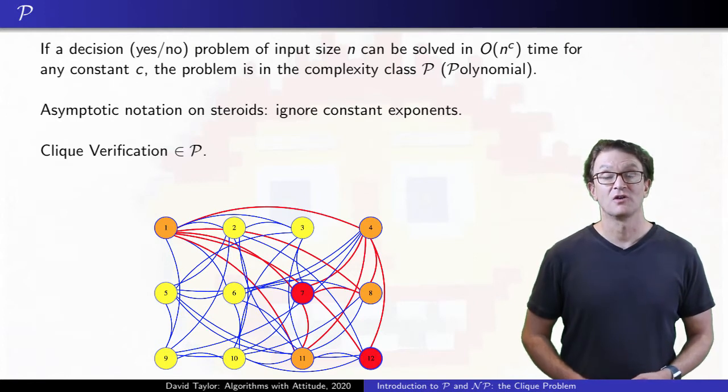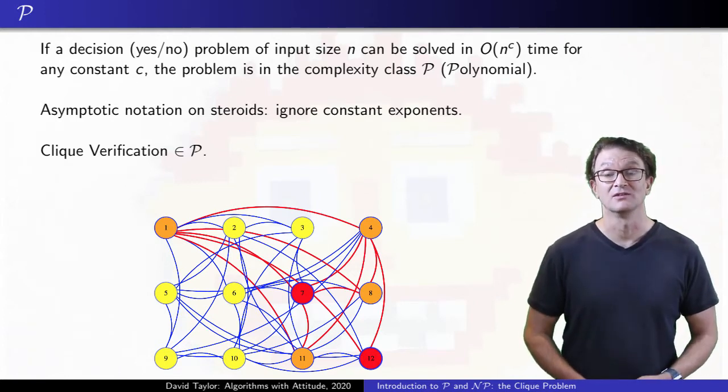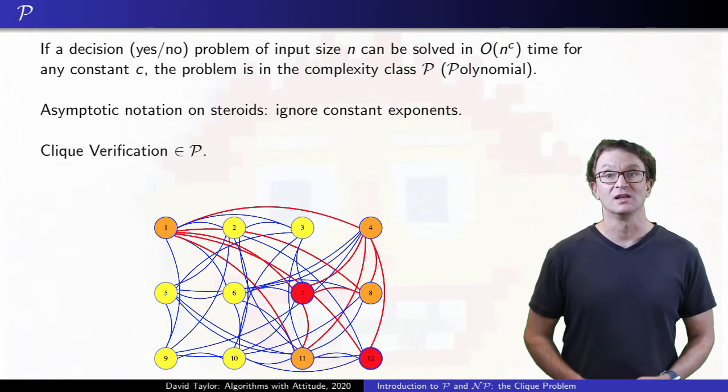Because we can solve the clique verification problem in polynomial time, and it's a decision problem, it is in P.